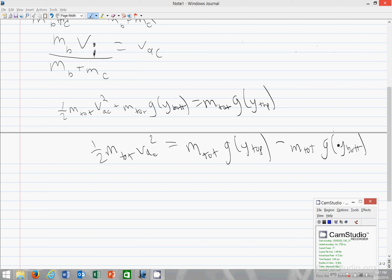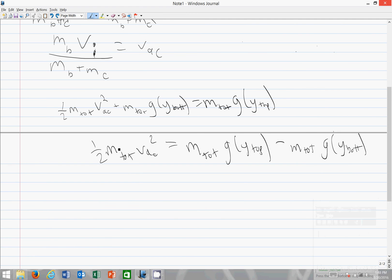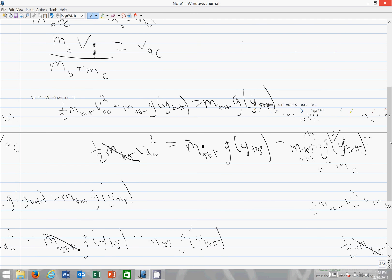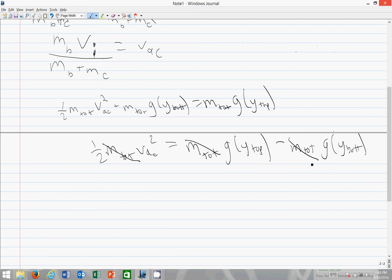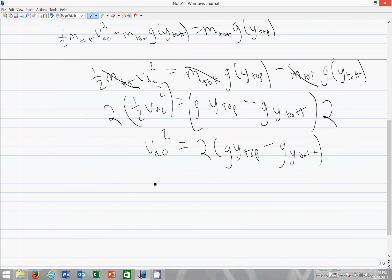So you subtract m total g y bottom from both sides and you can cancel the m totals, then divide by one half which is the same as multiplying by 2 on both sides and then square root.